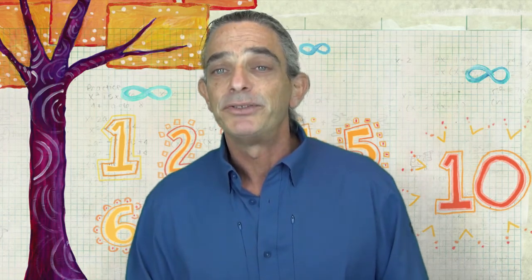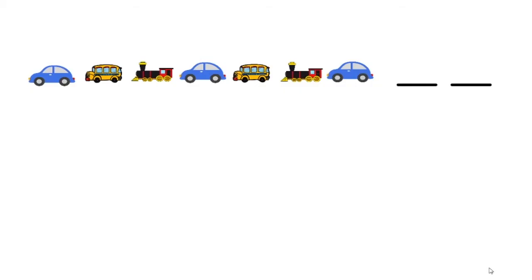This concept can be used no matter how complicated the pattern. Let's look at a more involved problem. We have: car, bus, train, car, bus, train, car, bus, train, car. Do you see anything repeating? Yes — we see car, bus, train repeating. Car, bus, train, car, bus, train, car — what do you think comes next in our pattern?